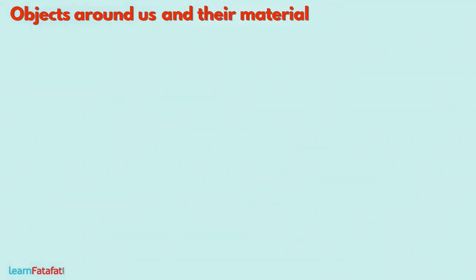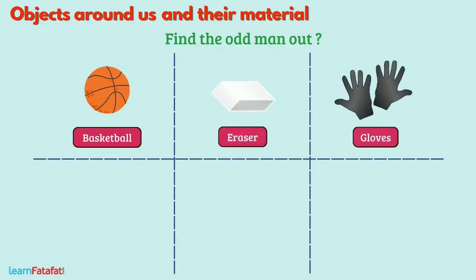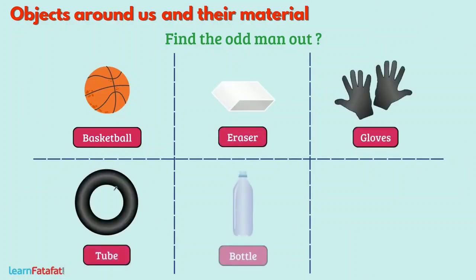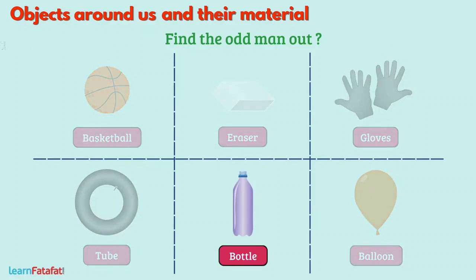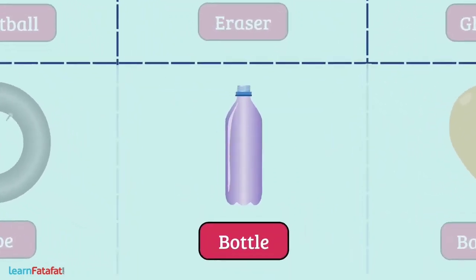To test your knowledge, here is a question: find the odd man out from the given examples — basketball, eraser, gloves, tube, bottle, balloon. The answer is bottle. We use rubber to make all the other things listed, except the bottle, for which we use plastic or glass material.